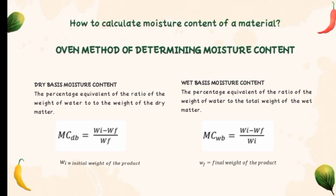How to calculate moisture content of a material? There are two methods of determining moisture content. Dry basis moisture content is the percentage equivalent of the ratio of the weight of water to the weight of the dry matter. Wet basis moisture content is the percentage equivalent of the ratio of the weight of water to the total weight of the wet matter.